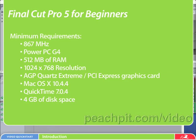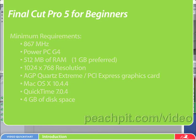A PowerPC G5 or Intel-based Macintosh, 1 GB or more of RAM, and a higher display resolution are recommended for better performance. Installing the complete Final Cut Studio suite has additional requirements. Please consult the general system requirements that accompany the installation disks.